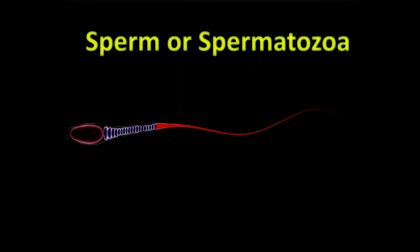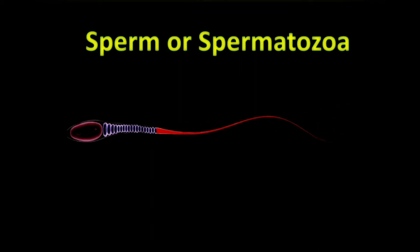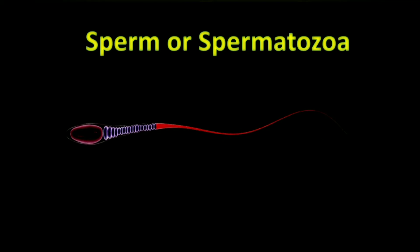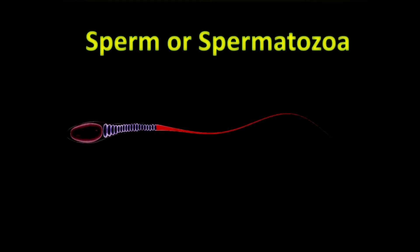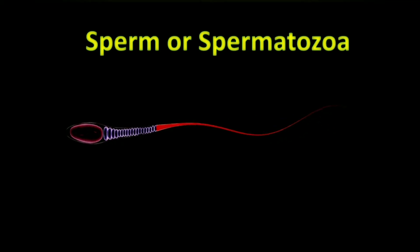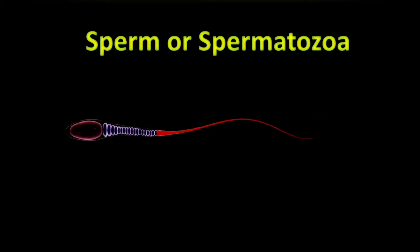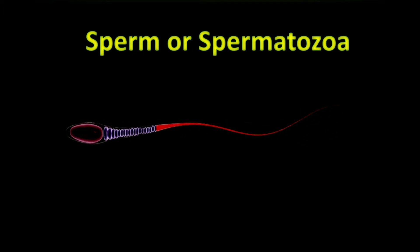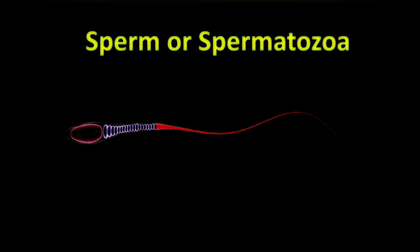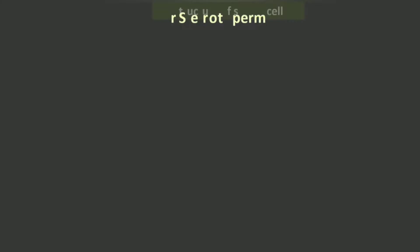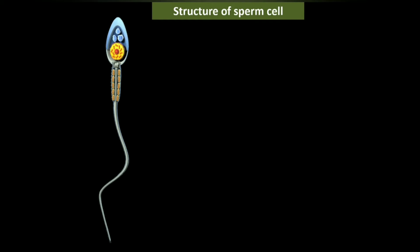Sperm, or spermatozoa, is the male reproductive cell or male gamete. Humans produce motile sperm with a tail known as a flagellum. Human sperm cells are approximately 60 microns in length and have a limited lifespan. The sperm cell can be divided into four regions: head, neck, middle piece, and tail.